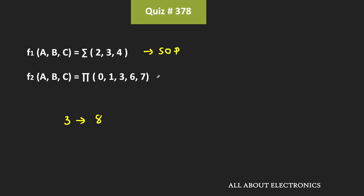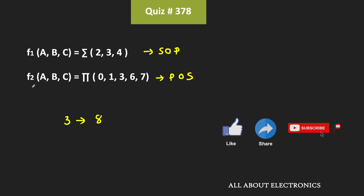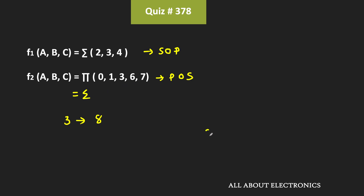This function f2 is given in the product of sum form, and as you can see, it contains total five maxterms. So first of all, let us convert this function f2 into the equivalent SOP form. In the SOP form, it will contain the minterms which are not present in this POS form. Starting from 0 to 7, the numbers which are missing in this POS form are 2, 4, and 5. So this is the equivalent SOP form of function f2.